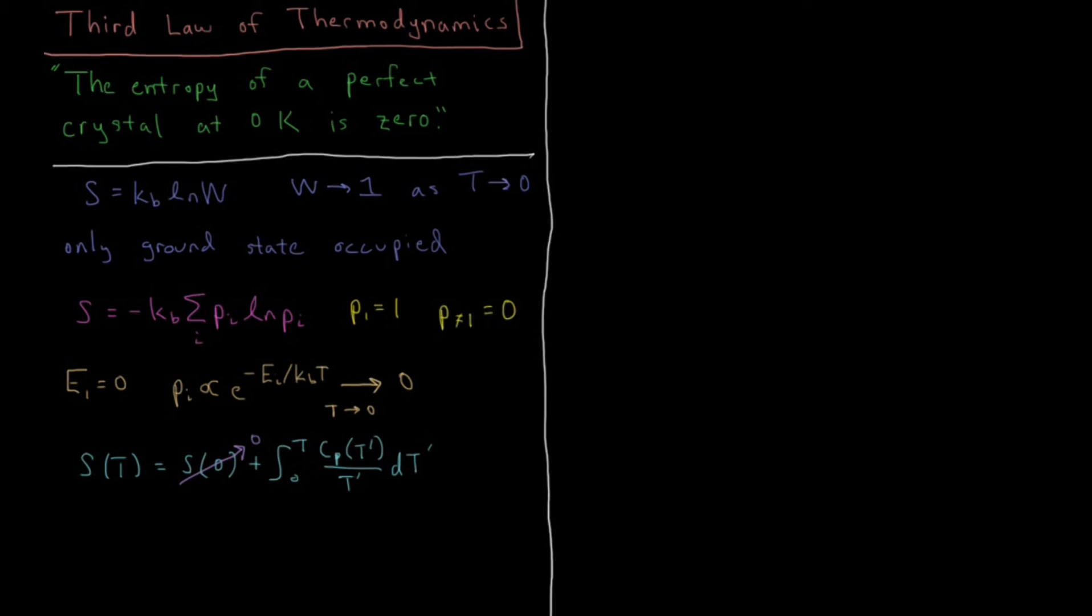So if we want to find the entropy at any given temperature, the only thing we need to do is we need to say that S of T is this integral here from zero to T of constant pressure heat capacity, cp of T prime over T prime integrated with respect to T prime. And this is for a constant pressure process, the pressure must stay the same. If you wanted for a constant volume process, you would just replace cp here with cv.